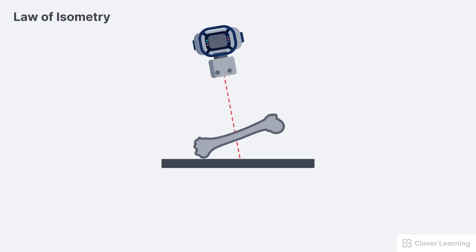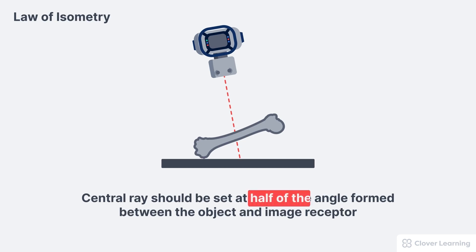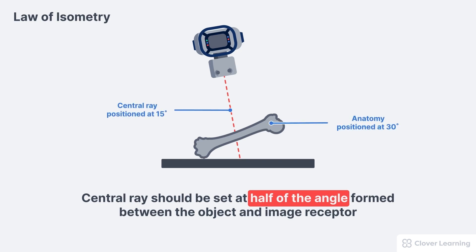In situations where patients cannot be positioned parallel to the image receptor, the law of isometry can be used to minimize foreshortening. The law of isometry states that the central ray should be set at half of the angle formed between the object and the image receptor to minimize foreshortening. For example, if an injury causes a patient's femur to be at a 30 degree angle to the image receptor, the central ray should be angled at half of that, which is 15 degrees, to help prevent the appearance of foreshortening.